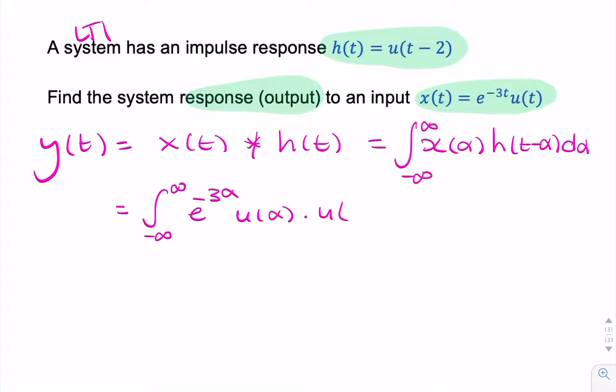And here we'd have t minus 2, it would be alpha, it's t minus alpha, so we need to say t minus alpha minus 2, d alpha.